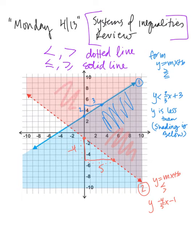Okay, the shading, let's use the highlighter, the shading is above. Above, so that means that y is greater than. Y is greater than negative four-fifths x minus one, which means the shading is above.